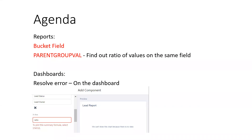Hi everyone. Today's agenda is learning a few new things about reports and dashboards. Bucket field in reports is not essentially new but I'll explain it. Then we'll talk about parent group val — how to calculate a ratio of values on a single field. There's also an error you could receive in dashboards when using that ratio field: 'to plot this summary formula, select status.'